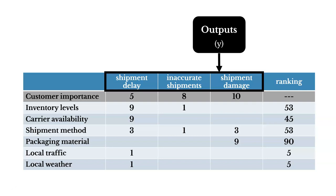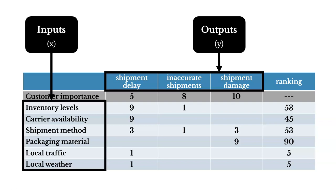Right below that, we're going to see a customer importance score. For each of these undesirable outputs, how important are they to the customer? A score of one is going to be least important, and a score of ten is going to be very important, very critical to the customer. On the left-hand side, we're going to see inputs — our X's — things like inventory levels, carrier availability such as UPS and FedEx, shipment method, and so on.